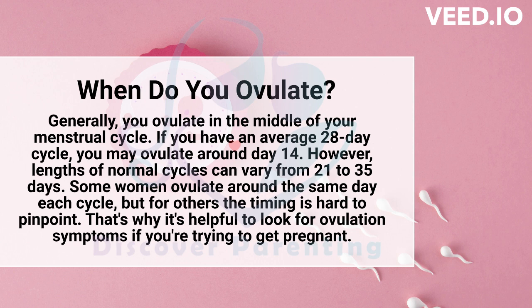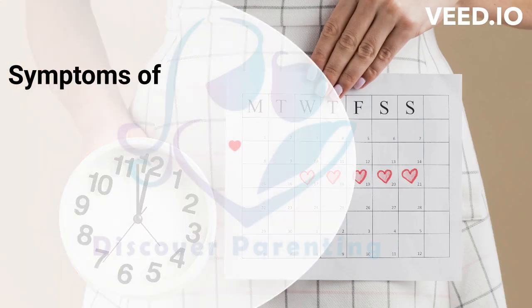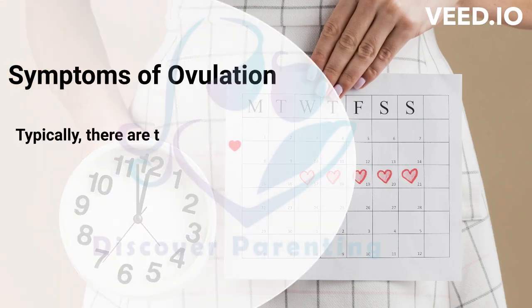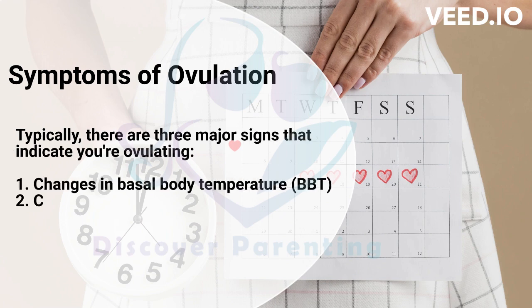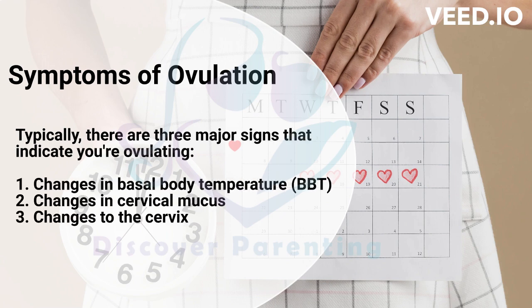That's why it's helpful to look for ovulation symptoms if you're trying to get pregnant. Typically, there are three major signs that indicate you're ovulating: changes in basal body temperature, changes in cervical mucus, and changes to the cervix.